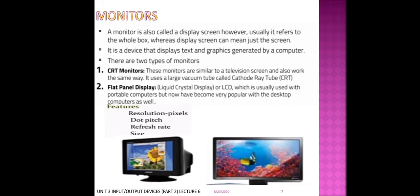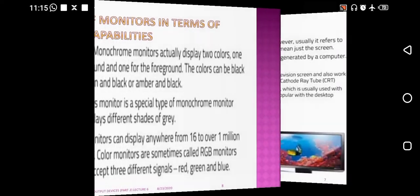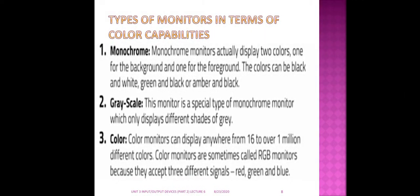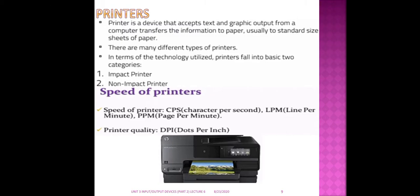The types of monitors in terms of color capabilities: first, monochrome — uses only two colors, one for the background and one for the foreground. Second is grayscale — it displays different shades of gray. Third is color, also called RGB monitor — red, green, blue — because it uses red, green, and blue signals. It can produce from 16 to over one million different colors.